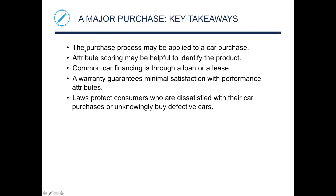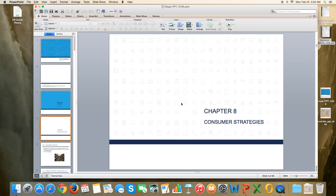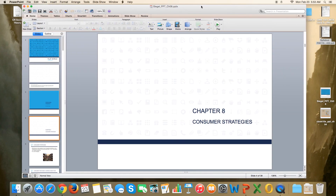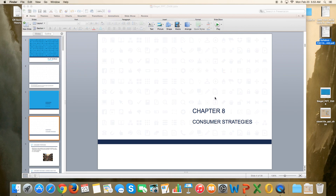Key takeaways on buying a car: the purchase process may be applied to a car purchase. Attribute scoring can help identify the product. Common car financing is either through loan or lease. A warranty guarantees minimal satisfaction with performance attributes. Laws protect consumers who are dissatisfied with their car purchases or unknowingly buy defective cars. This concludes the video lecture for Chapter 8, Consumer Strategies, of the Personal Finance text.